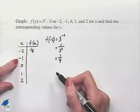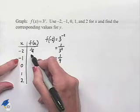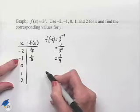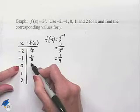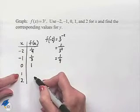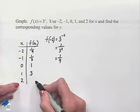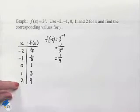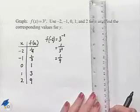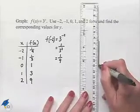If we substitute in an exponent power of negative 1, then 3 to the negative 1 power is 1 third. 3 to the 0 power is 1. 3 to the 1st power is 3. And 3 squared is 9. Now we're going to quickly sketch a graph where we plot these points.